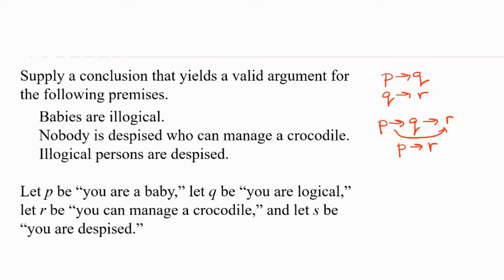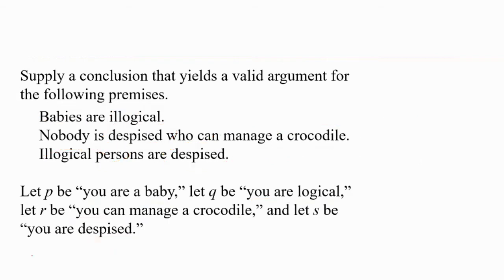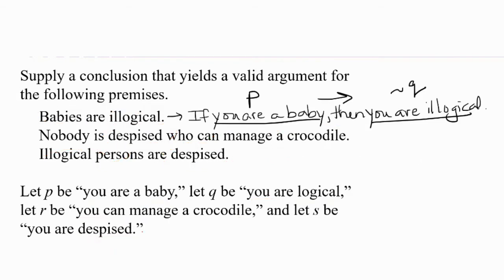I forgot, I'm going to let P represent being a baby, Q represent being logical, R represent you can manage a crocodile, and S be you're despised. This covers babies, illogical, despised, ability to manage a crocodile, and illogical. Using that and the idea that babies are illogical means if you're a baby then you're illogical, I could write that first premise as P implies not Q.